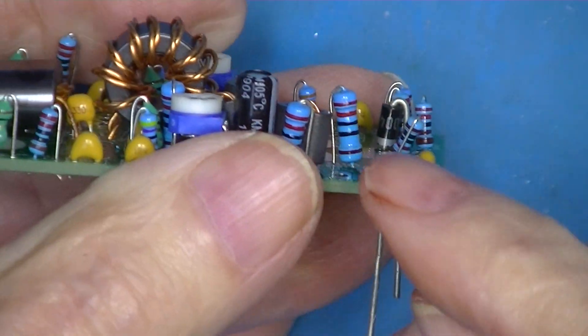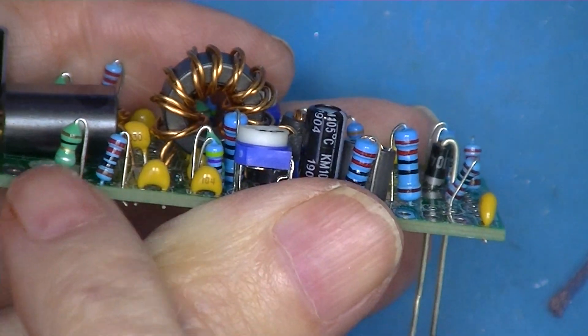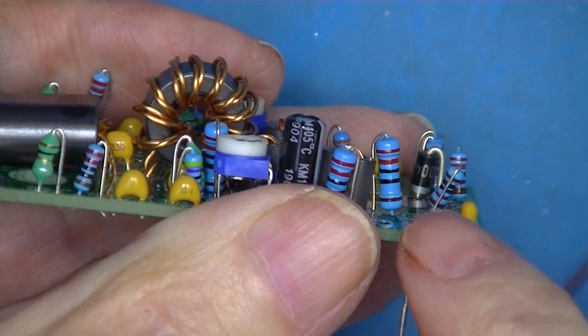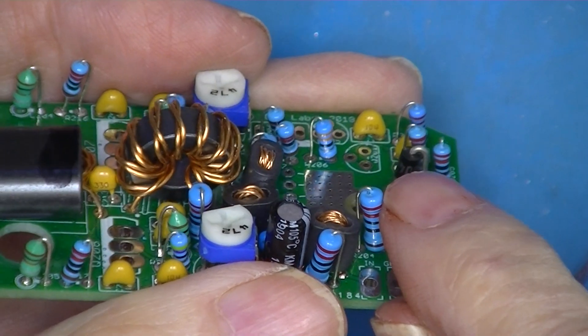Now, the resistors, these capacitors, these inductors, they had no polarity. But the diode does.